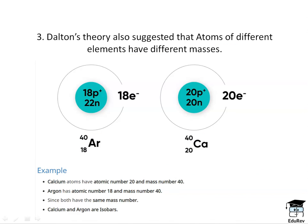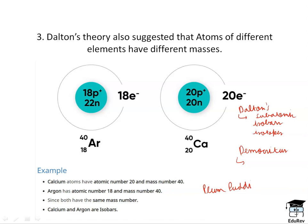So, till now we discussed the Democritus atomic model and Dalton's atomic model — the postulates and the drawbacks of both. The drawbacks of Dalton's atomic model were the discovery of subatomic particles, the discovery of isotopes, and the discovery of isobars. Our next atomic model is J.J. Thomson's model of an atom, also known as the plum pudding model, which we will be discussing in detail in the next portion. Thank you.